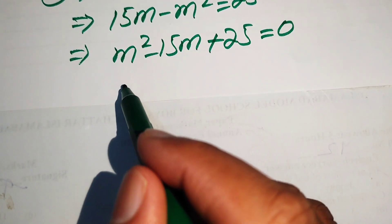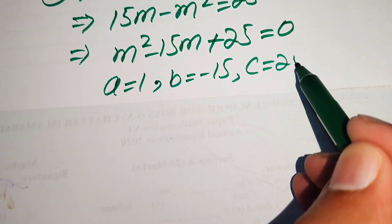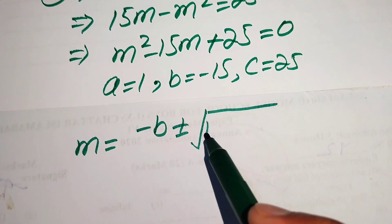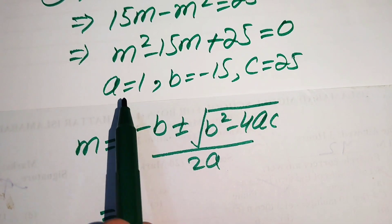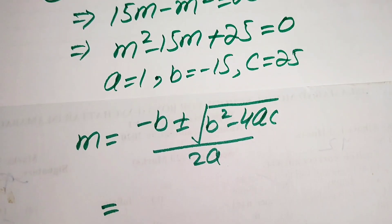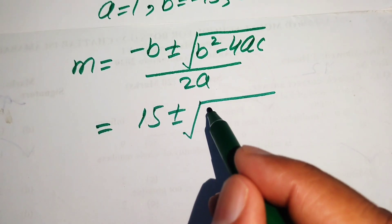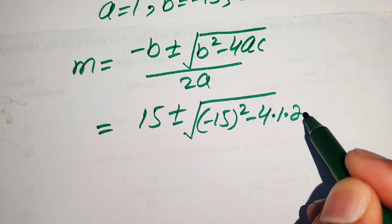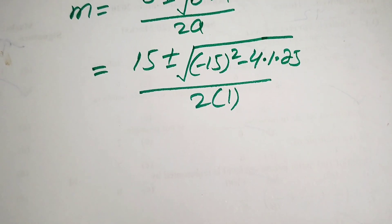We use the quadratic formula to solve this equation. The coefficients are a = 1, b = −15, and c = 25. The quadratic formula is m = (−b ± √(b² − 4ac)) / (2a). Substituting: m = (15 ± √(225 − 4·1·25)) / (2·1).